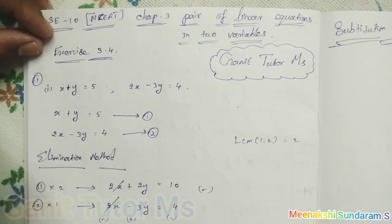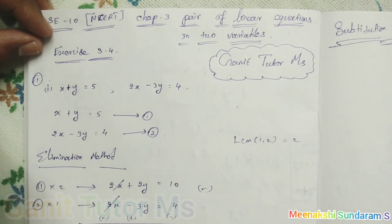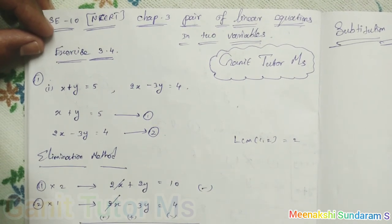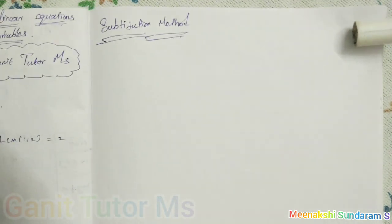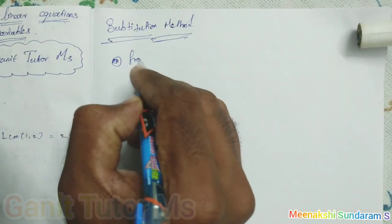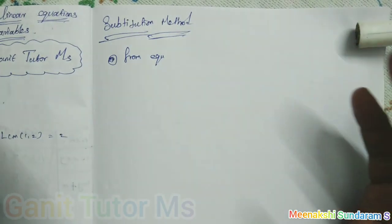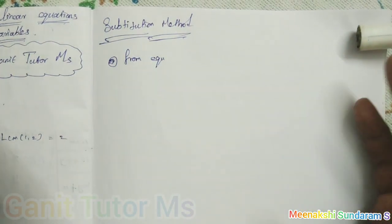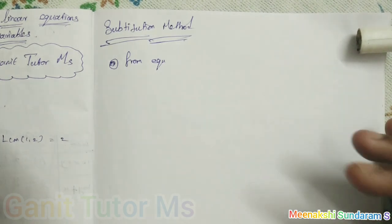Next, in the same problem, we can solve the equations by substitution method. They are asking for two methods: elimination as well as substitution. I have just completed the elimination method, now I can use the substitution method. In the substitution method, we write x in terms of the y variable from equation number 1, then substitute the x value into equation number 2 to find y.